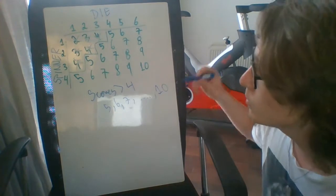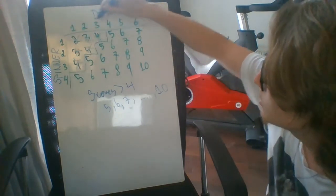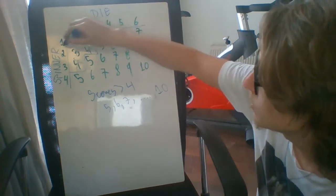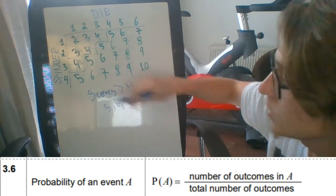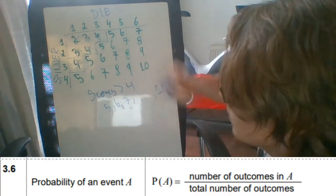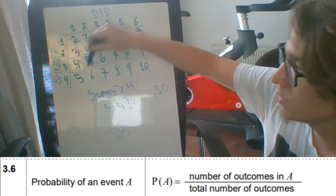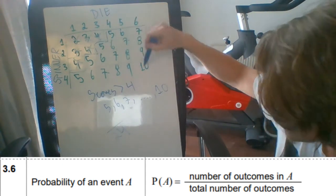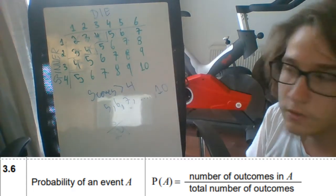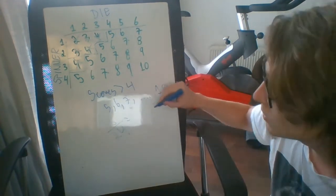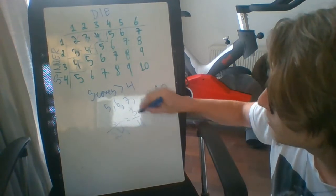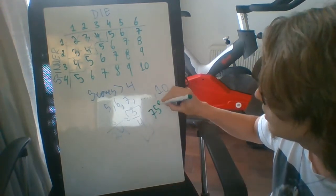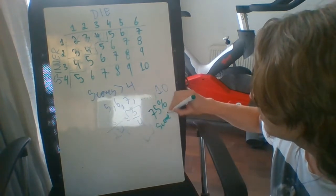First things first: how many possibilities are there? If we do four times six, there are going to be 24 squares — 24 total possibilities. Out of those 24, counting the outcomes where the score is greater than four, we get 18 options. So the probability is 18 over 24, which simplifies to three over four — a 75% probability that the score is greater than four. That is part A.